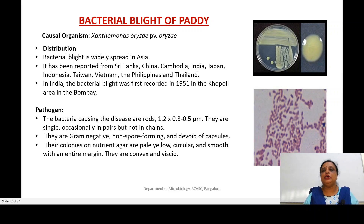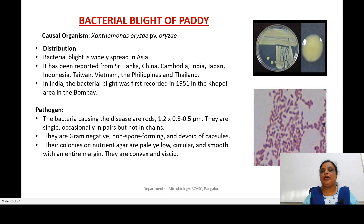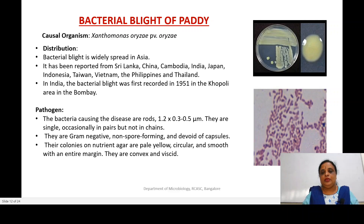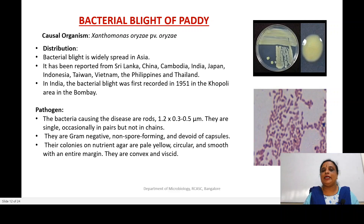To summarize: this is a gram-negative, rod-shaped bacteria. Usually they are single; sometimes they are in pairs, but never in chains. They are around 1.2 by 0.3 to 0.5 micrometers in length and breadth. They are gram-negative, aerobic, motile with a single flagella, and they form a pale yellow colony on nutrient agar. The colony is circular, smooth, convex with entire margin.